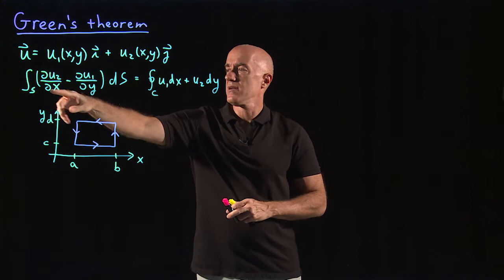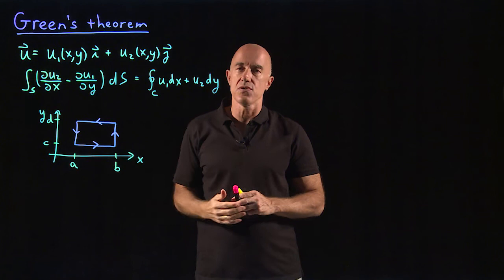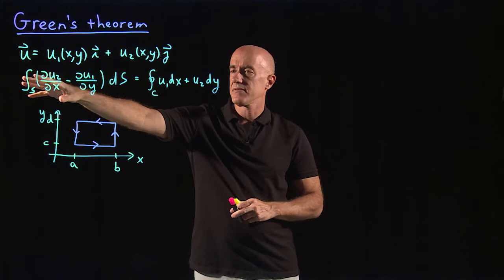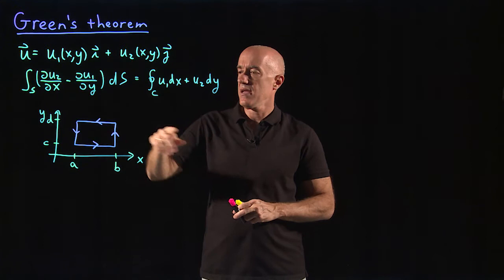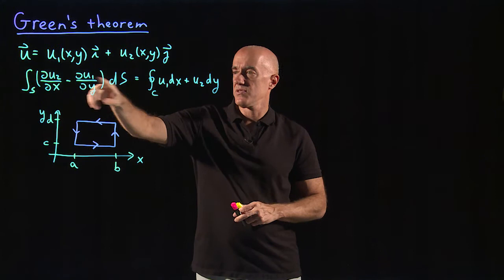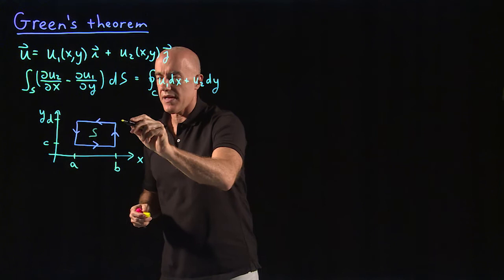So Green's theorem says the integral over an area or a surface in the xy plane of du2/dx minus du1/dy (this should look to you like the third component of a curl) ds is equal to a line integral, which is essentially u dot dr in the plane, which is u1 dx plus u2 dy. And the line integral is enclosing this surface. This is the surface S here, and this curve here is our C.